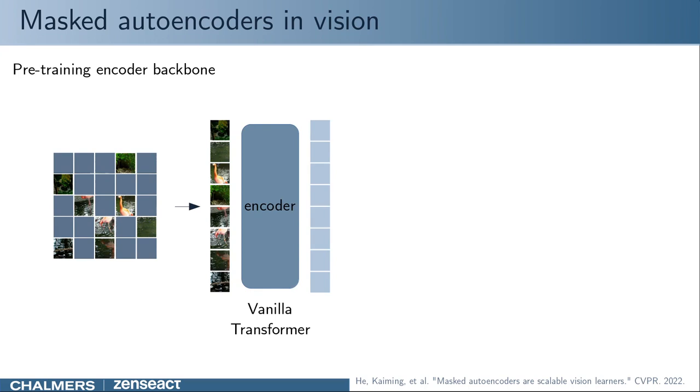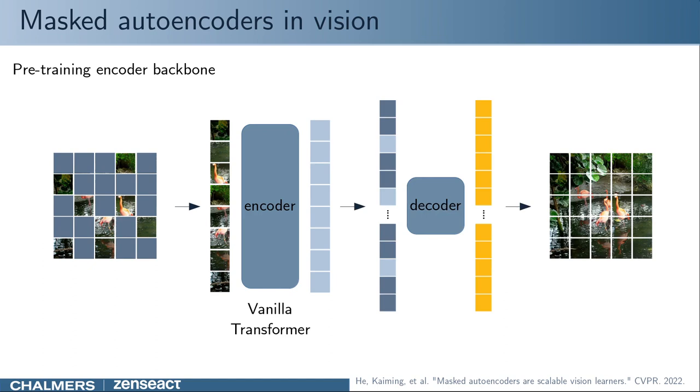Next, the visible patches are fed through an encoder. Here, a transformer is used as it elegantly handles varying sequence lengths. The encoded patches are concatenated with the mask patches and fed through a decoder. Mask patches are represented as a learnable mask token and some positional embedding. Finally, the decoder aims to reconstruct the original image.